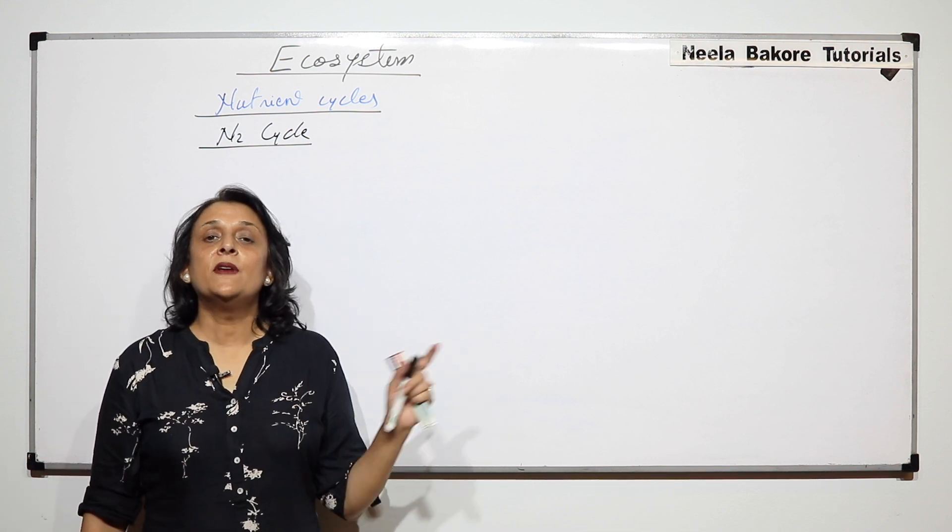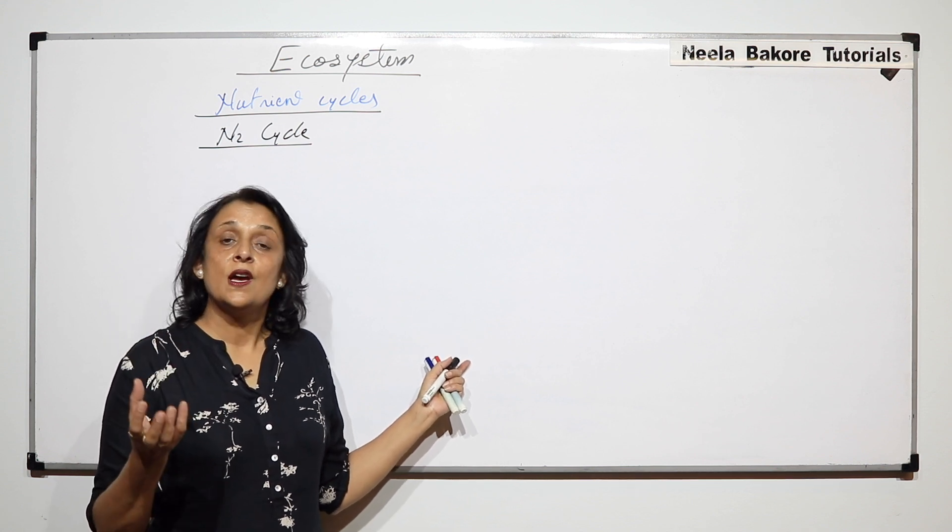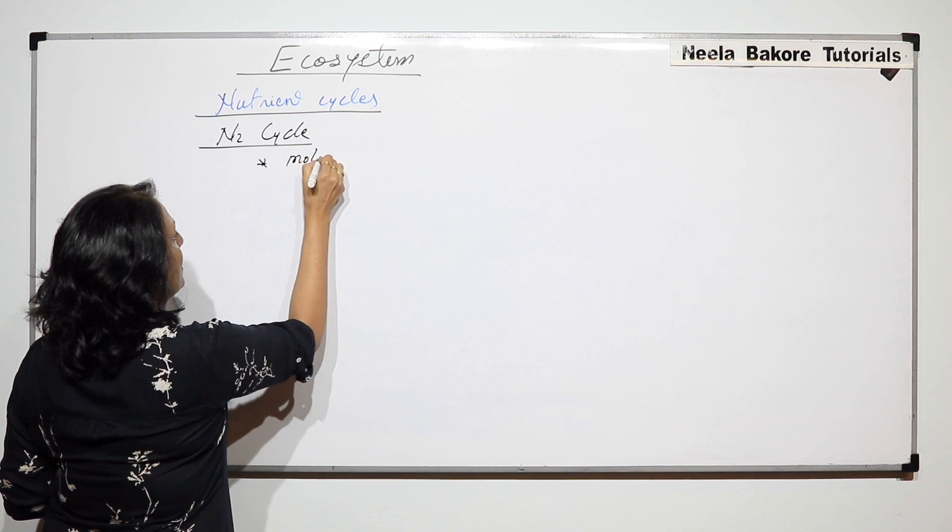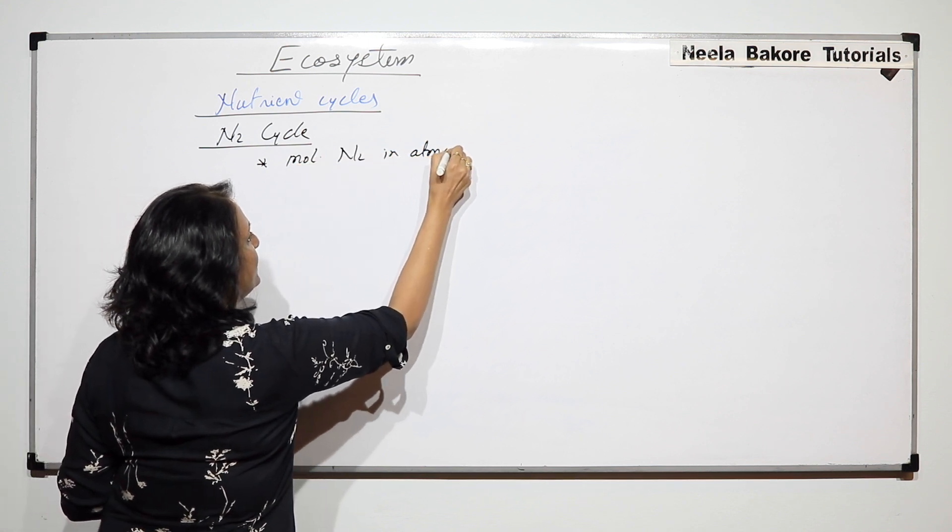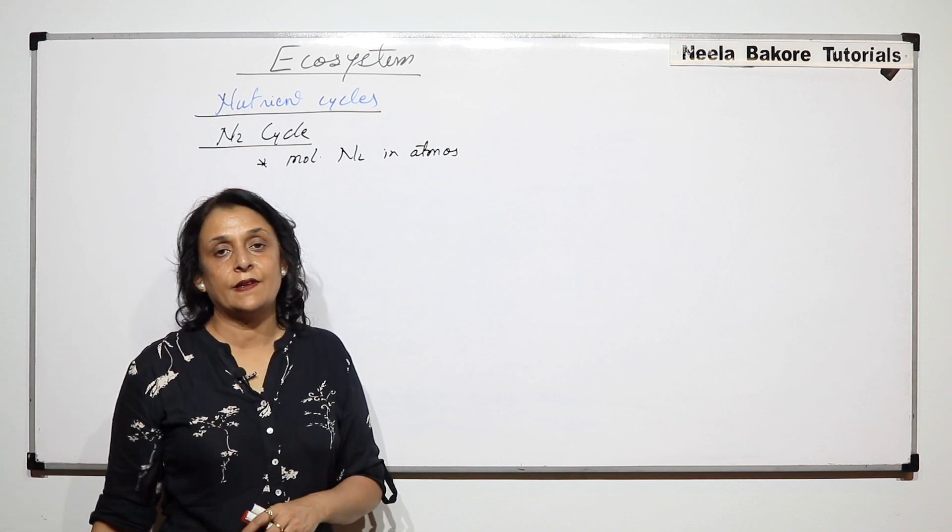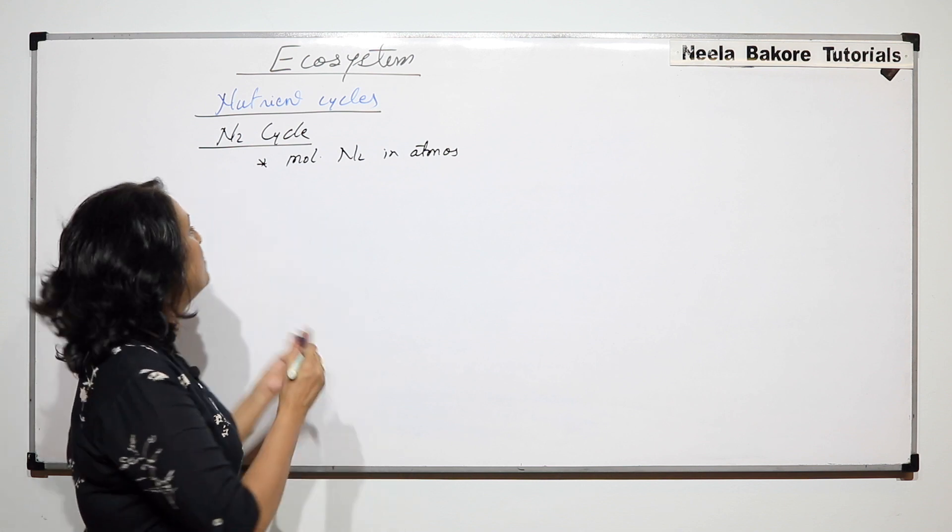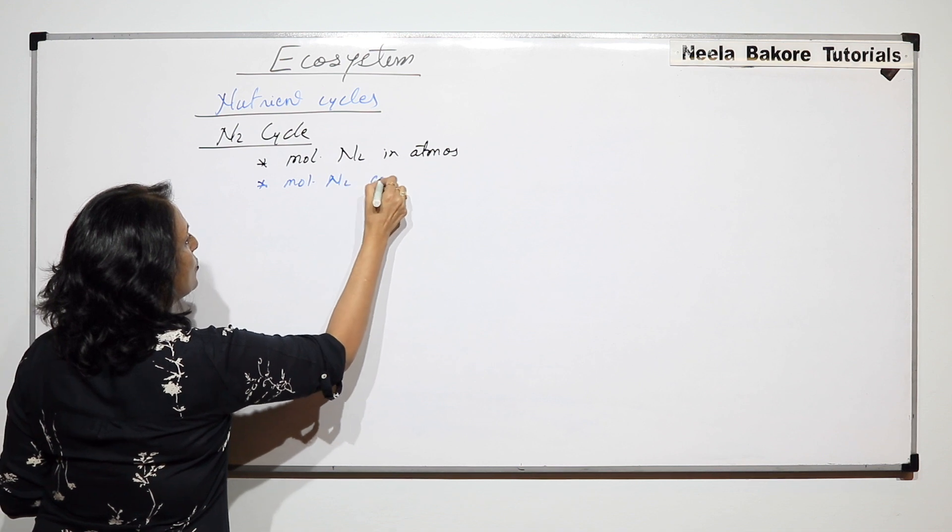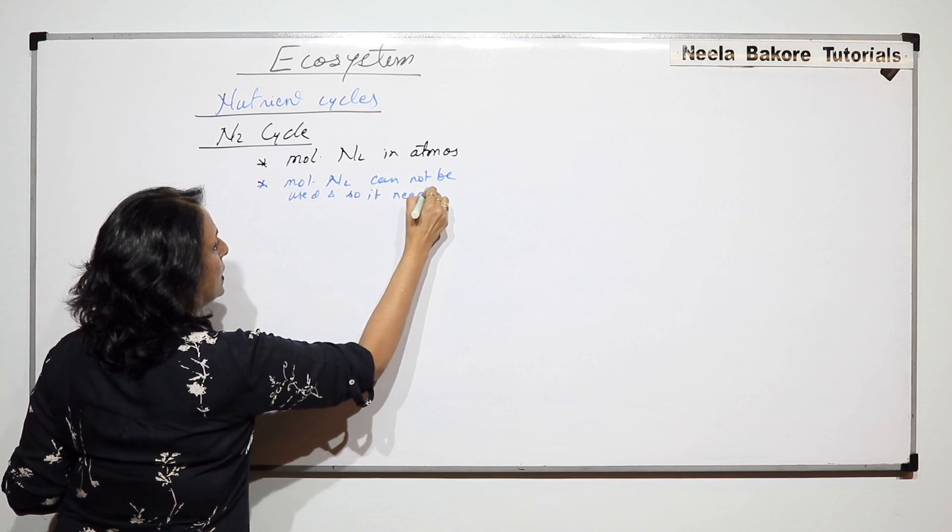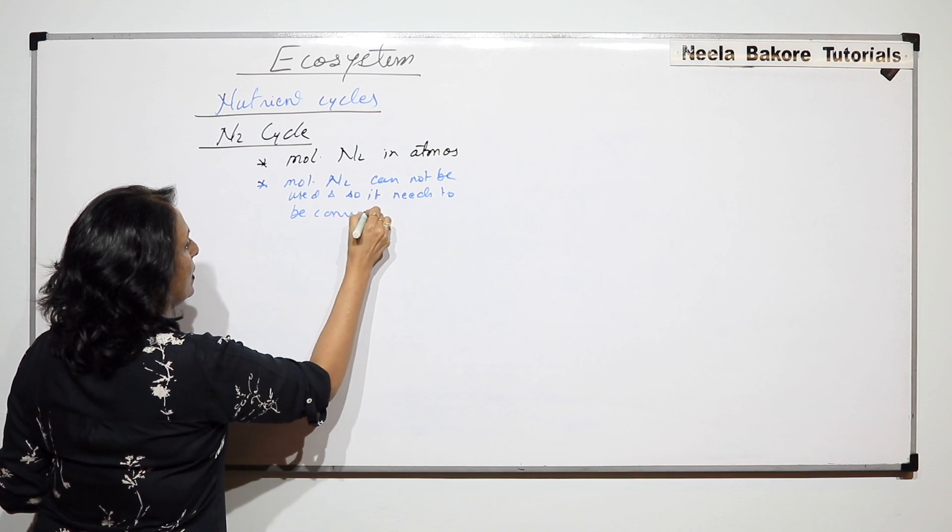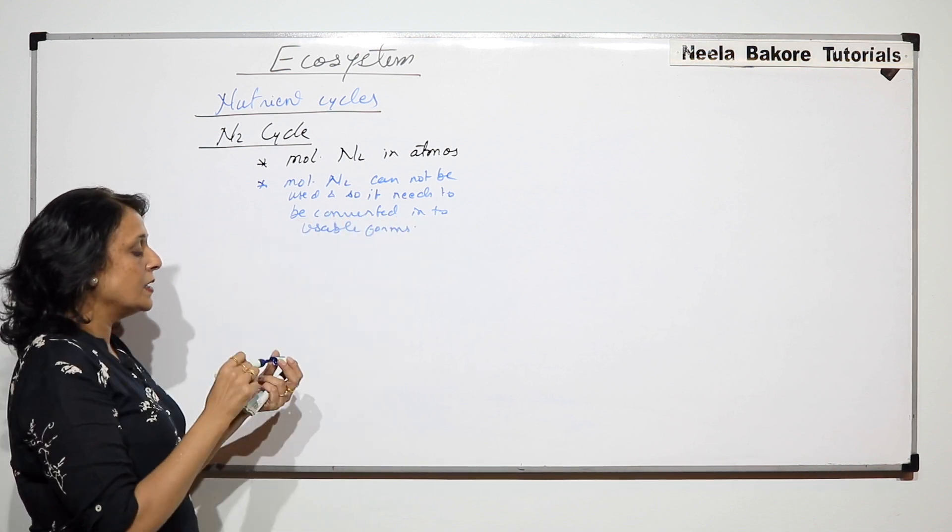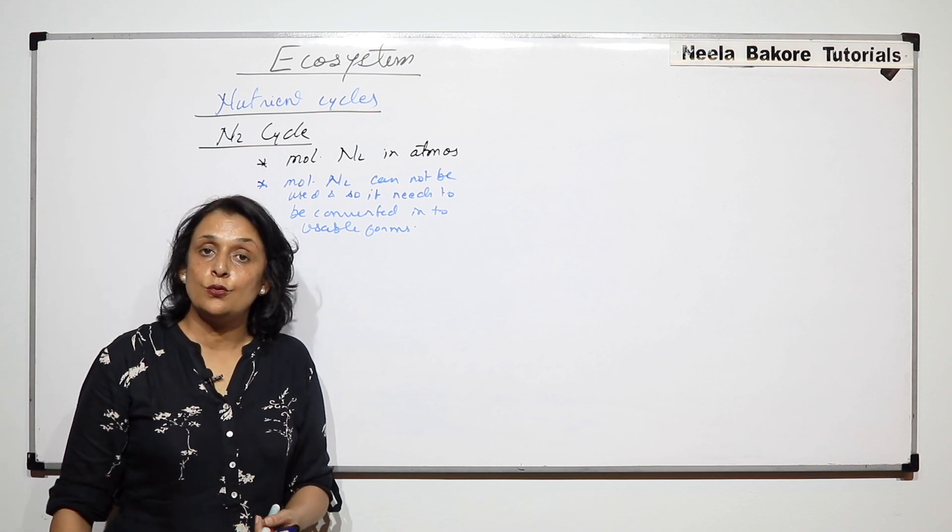Again in any mineral cycle we have to keep in mind what is the source and then how it is used by the living organisms. So the source is molecular nitrogen in atmosphere. This is the only source of nitrogen, but this molecular nitrogen cannot be used as molecular nitrogen. So it has to be converted into usable form. Now what are these usable forms and how is this nitrogen converted into the usable form?